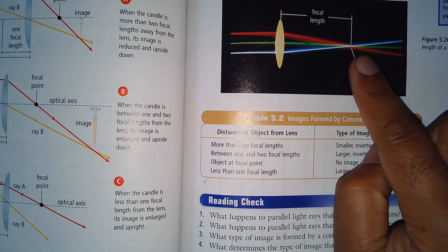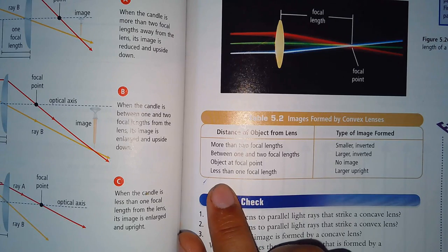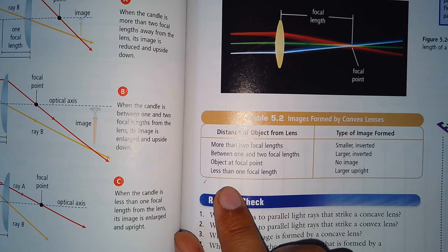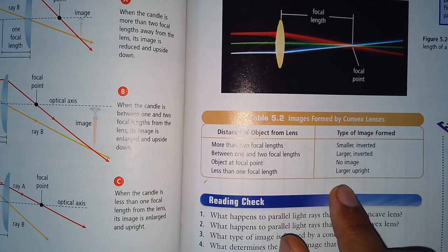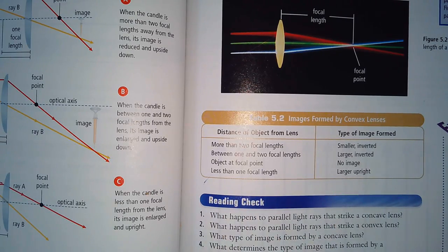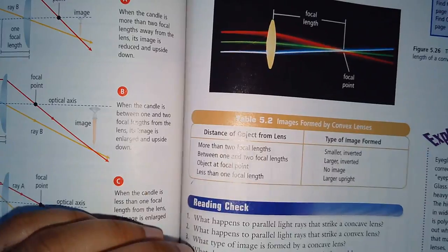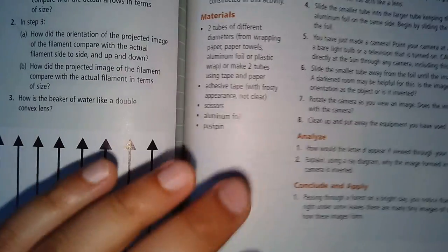If you're at the focal point, there's no image—we call that spot the blind spot. And then when you're within one focal length, so now you're quite close to the lens, you get a larger upright image. Again, that one is definitely a lot more complicated than the concave lens.